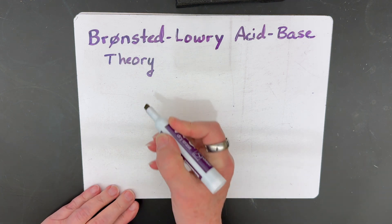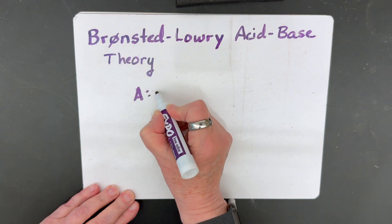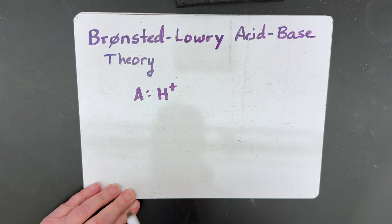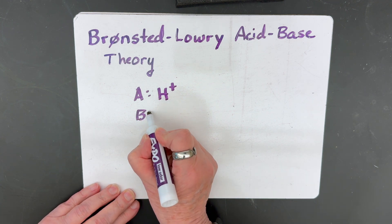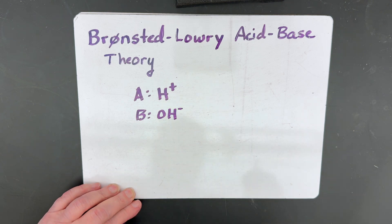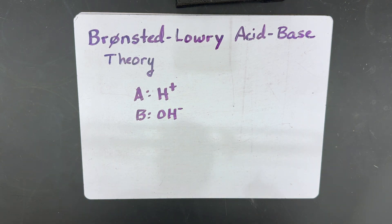What he said was that acids gave off hydrogen ions when put into a solution, and bases gave off hydroxide ions when put into a solution. And when you combine these two, they neutralize each other and make water and a salt.